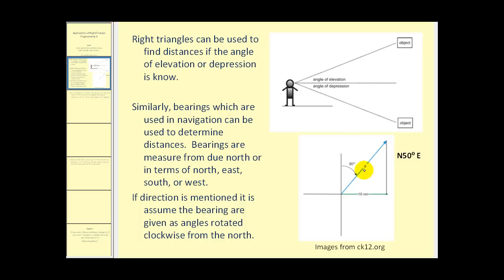Here's an example. Here's due north. North 50 degrees east would be represented by this angle here. Notice how it's measured clockwise from due north. That's important because if direction is not mentioned, it is assumed the bearings are given as angles rotated clockwise from the north.